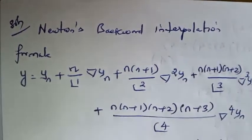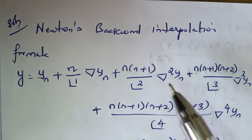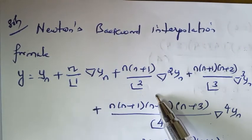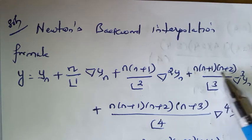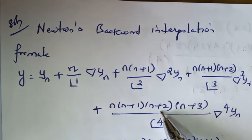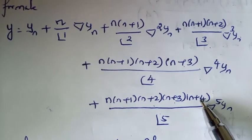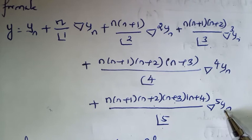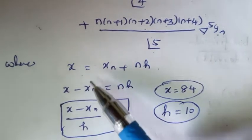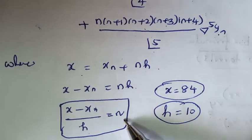We apply Newton's backward interpolation formula: y = yₙ + (n/1!) ∇yₙ + ... where x = xₙ + nh. Rearranging: x − xₙ = nh, so n = (x − xₙ) / h.